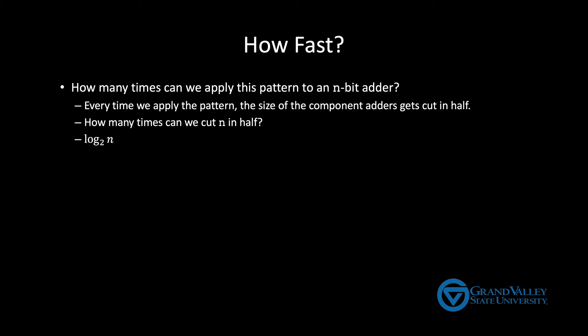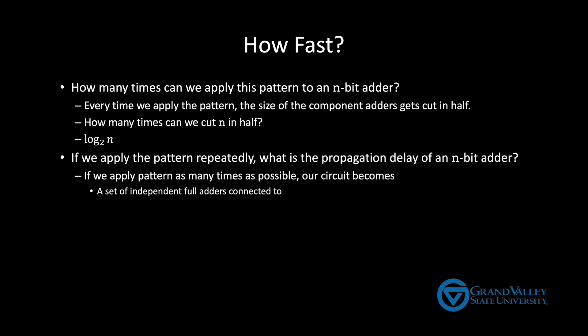So if we apply this pattern all log N times, what's the overall propagation delay for an N-bit adder? So if we do that the circuit breaks down into a set of independent full adders, one one-bit full adder for each pair of input bits, connected to a tree of multiplexers. Each full adder just runs in constant time. It's just a single full adder. And all of the full adders can run in parallel because they're connected directly to the A and B inputs. So that section of the adder has a constant propagation delay.